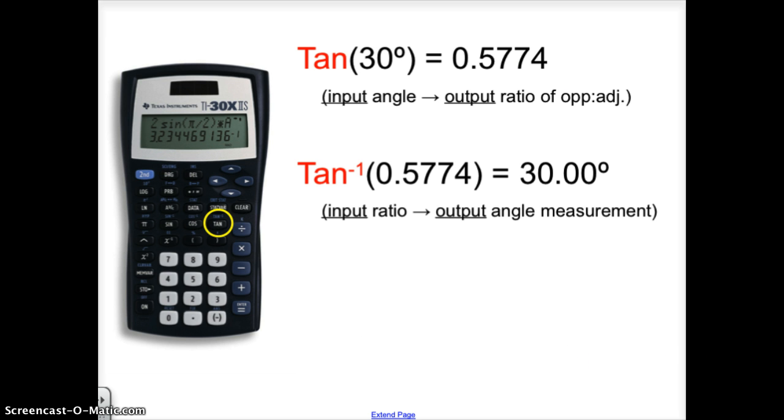On your calculator, there is a function, the tangent button, and depending on what you're looking for, if you need to find the ratio, the tangent of 30 degrees, if you typed that in, you would get the decimal version of that ratio that corresponds to the table on page 311.